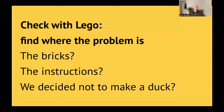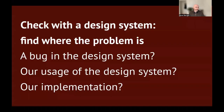Checking with Lego is also about finding where the problem is, if there is one. Maybe it's with the bricks — are they all there, are some broken, did I use the right ones? Maybe it's about the instructions — did I follow all the steps, did I miss something? Or maybe we just decided not to make a duck and instead made a sports car colored like a duck. Checking with the design system is about finding where the problem is: maybe there's a bug in the design system, maybe we didn't use it in quite the intended way, or maybe it's something custom that we did that's for us to look at and fix.